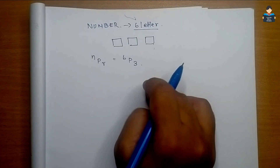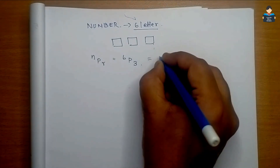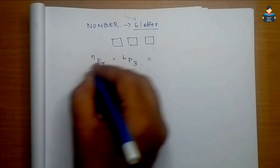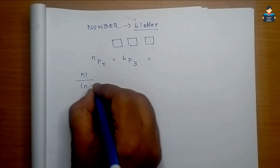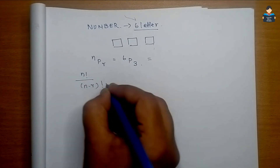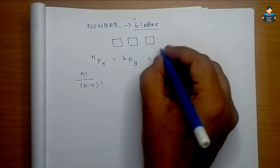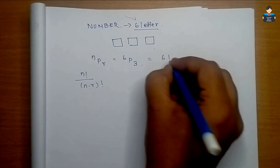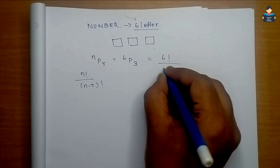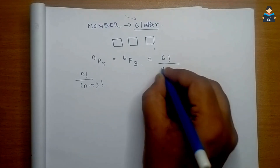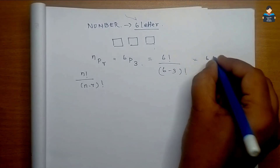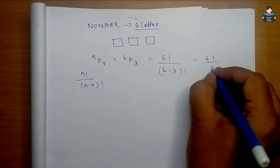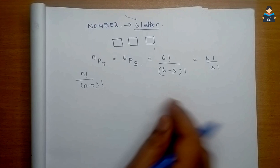Using the formula nPr equals n factorial by (n minus r) factorial, we get 6 factorial by (6 minus 3) factorial, which is 6 factorial by 3 factorial.